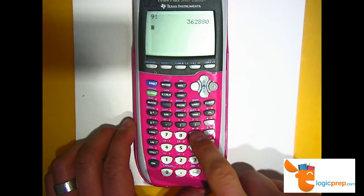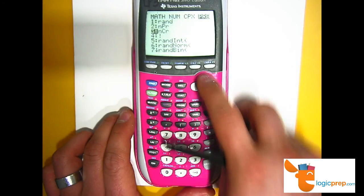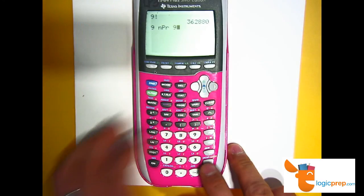I also could have done 9, math, probability, and nPr, 9 pick 9, which will be the same value.